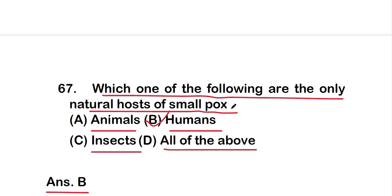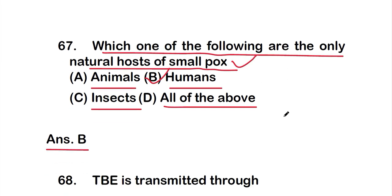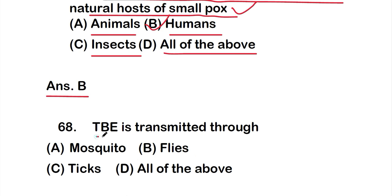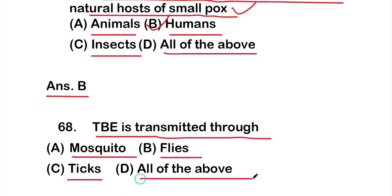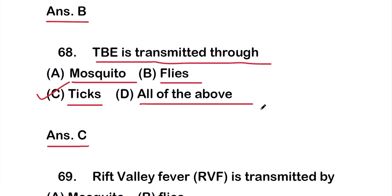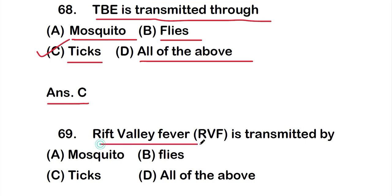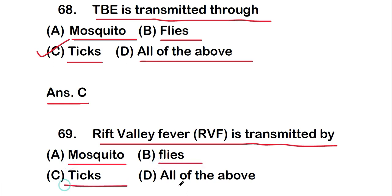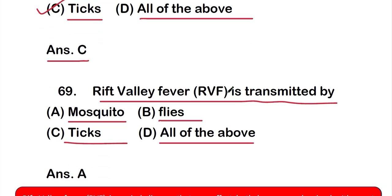Question number 68 covers tick-borne encephalitis (TBE) transmission. Question number 69: Rift Valley Fever (RVF) is transmitted through — option A: mosquitoes, option B: flies, option C: ticks, or option D: all of the above. The correct answer is option A — Rift Valley Fever is transmitted by mosquitoes.